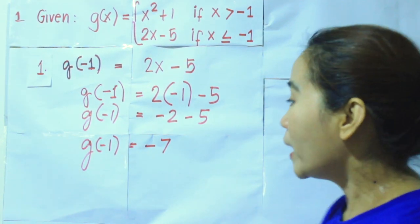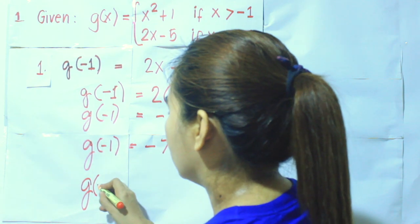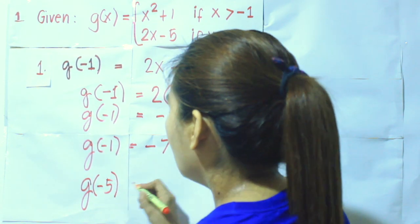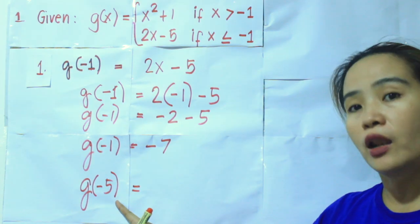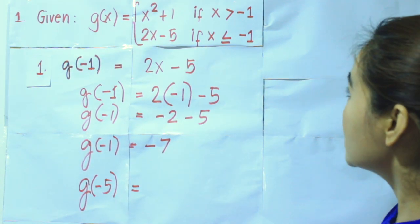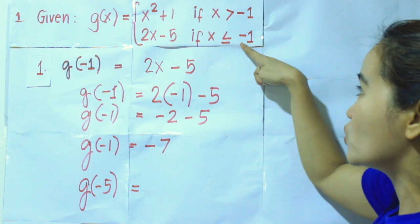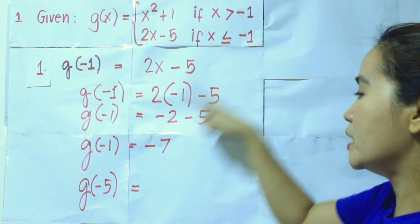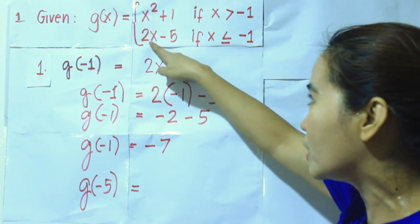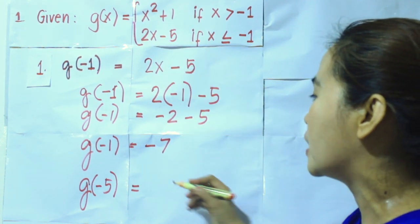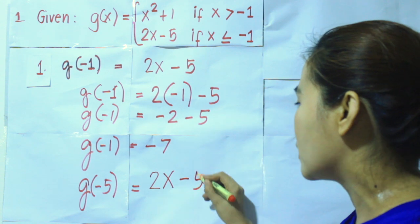What about g of negative 5? Where does negative 5 fall — under which specified domain? Obviously, negative 5 is less than negative 1. So therefore, we will still be using 2x minus 5.